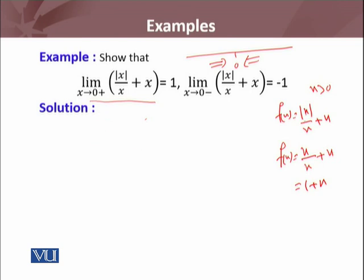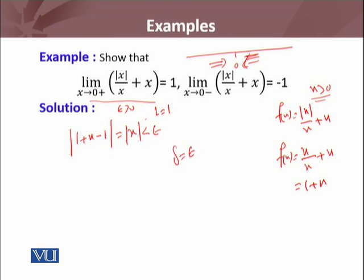So f(x) becomes 1 + x if x > 0. Now checking if the right-sided limit exists: f(x) = 1 + x and L = 1. The absolute value of f(x) − L = |1 + x − 1| = |x|. For every ε > 0, I have formally proved that the right-sided limit of this function equals 1.